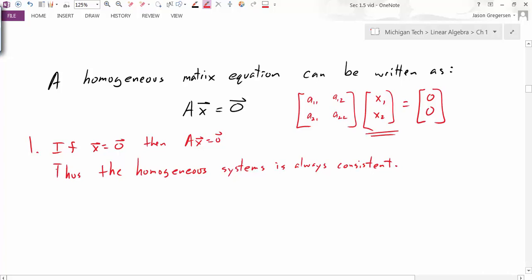Another way to state that would be to say the homogeneous system is always consistent. Remember, consistent just means that it has at least one solution, and we can always see that x equals 0 is a solution, thus the system is consistent. Now that was easy to see. In fact, it was so easy that we call x equals 0 the trivial solution.